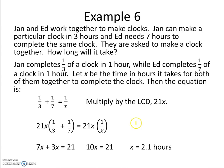If Jan completes a third of a clock in an hour, while Ed completes a seventh of a clock in one hour, we're going to let x be the time in hours it takes for both of them to complete the clock together. Then the equation is 1 third plus 1 seventh equals 1 over x.